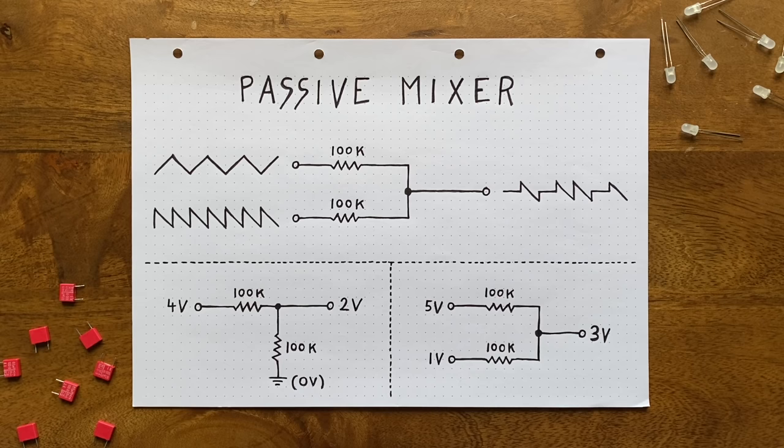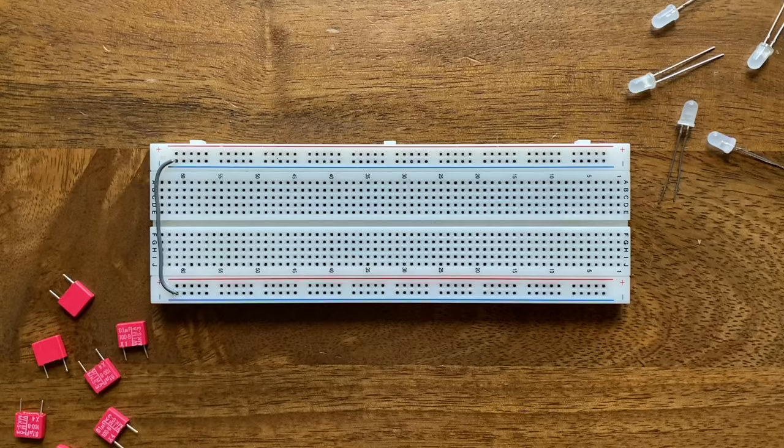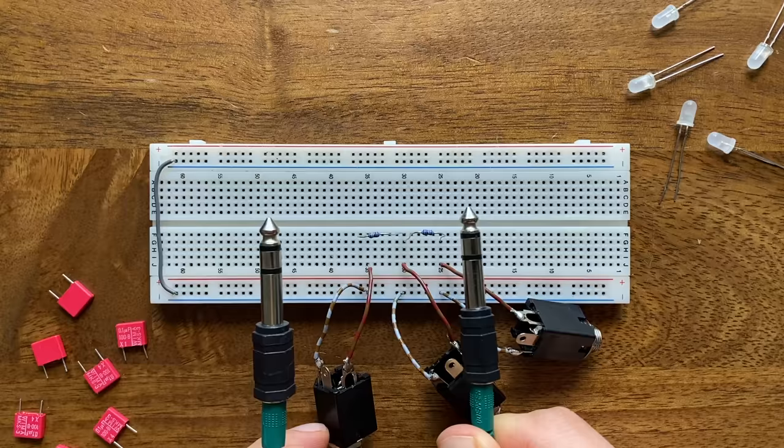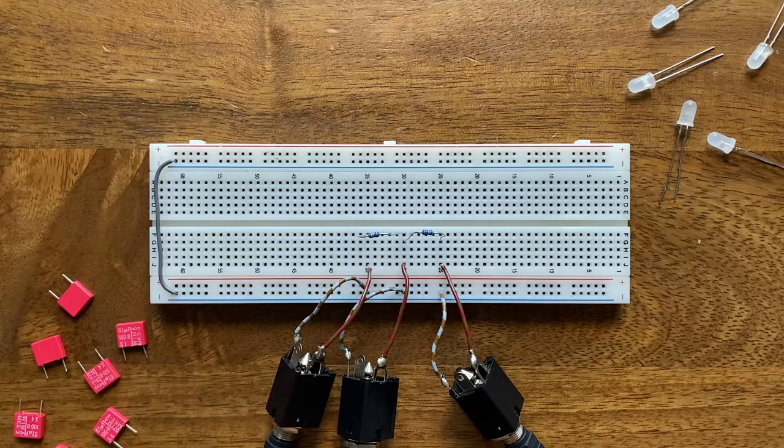To try this in practice, let's set it up on the breadboard. So I'll connect two jack sockets via 200k resistors and attach another socket where the resistors meet. For our two input signals, I'll use a drum track from my drum machine, and a simple sequence from my modular.